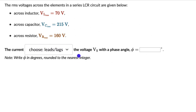Before I get into this, maybe pause the video and see if you can attempt this on your own. Hopefully you have given it a try. So how do we start thinking about this question? It is asking whether the current is leading or lagging the supply voltage, but nowhere in the question do we know what the supply voltage is. So maybe that's one thing that I need to figure out. And when I know what the supply voltage is, I should be able to tell whether the current is leading or lagging it.